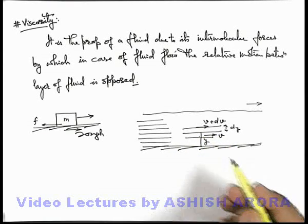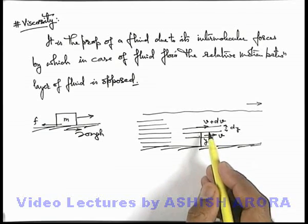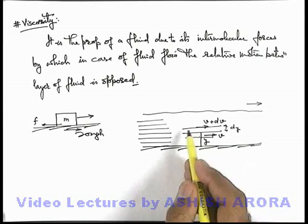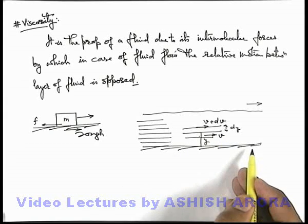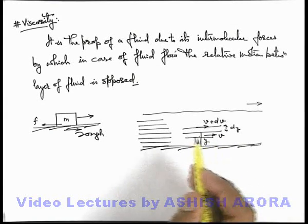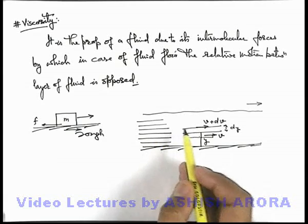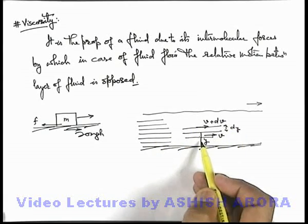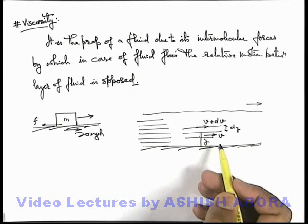This you can also experience practically if you just flow water on ground or any liquid on a rough surface. Then in that case we can clearly observe that the topmost layer of the liquid or water will flow faster compared to the lower layer of fluid because lower layer will experience more friction.